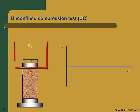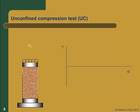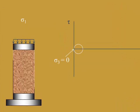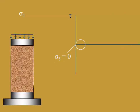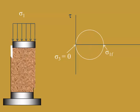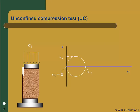In the unconfined compression test, a vertical stress is applied to the soil without any lateral confining stress — that is, the minor principal stress sigma3 is equal to zero. Therefore, the Mohr's circles for this test are all tangent to the tau axis. The vertical stress is increased until the soil fails. At failure, the maximum principal stress is denoted sigma1f. This is a total stress test; we have no measure of the pore pressures and cannot determine the effective stresses. The peak shear stress at failure is a measure of the undrained strength SU. There is no failure envelope for this test since we have only one Mohr circle.